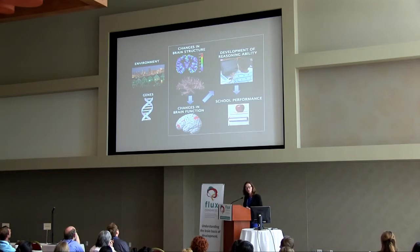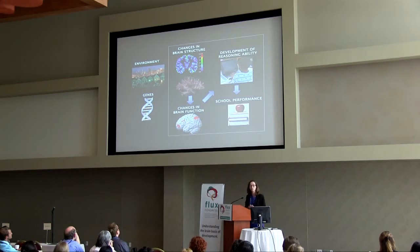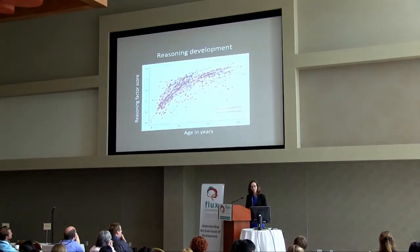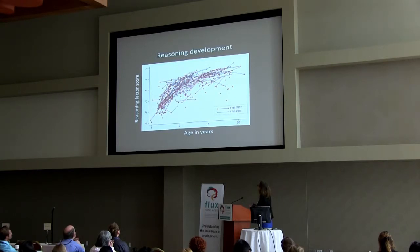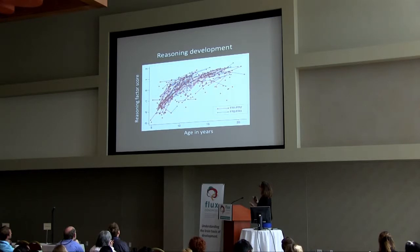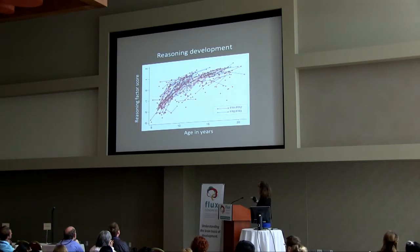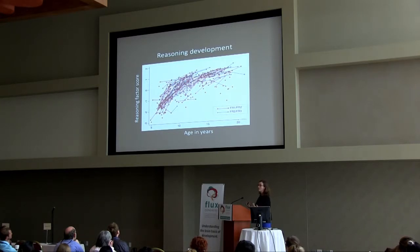We've done a large longitudinal study involving 201 kids with three time points — it's been a rich source of data funded by NINDS. Our kids started at age six. The red lines show change in reasoning on a factor score of four standardized measures: red shows change from time one to time two, and blue from time two to time three. You can see a lot of individual variability, but also a really nice trajectory as well.